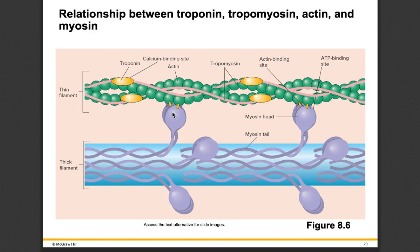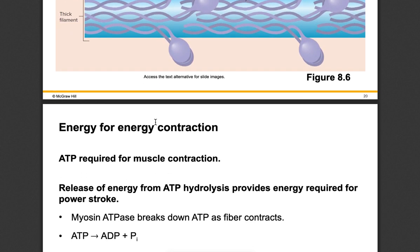When calcium is released into the cell, it binds to troponin, which causes tropomyosin to move away from the actin binding site, allowing myosin and actin to bind. Once these two are bound, through ATP the myosin head does a power stroke — it moves and pulls that actin a little bit closer to the Z disc, then releases. If calcium is still present, it will reattach and do another power stroke. Think of tug of war — a hand-over-hand pulling mechanism where myosin is pulling actin into the Z line.